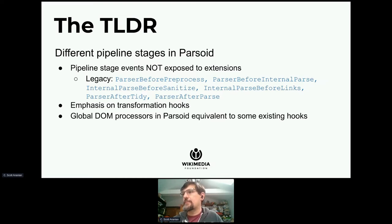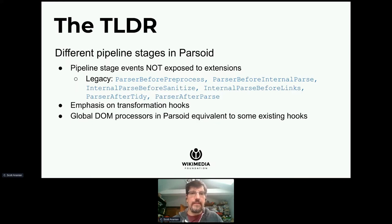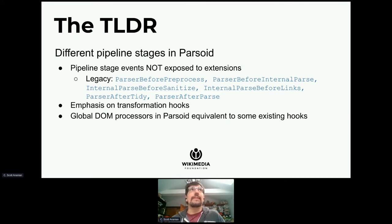Parsoid's emphasis is on DOM transformation — the hooks we provide give you a DOM tree and expect a DOM tree or DOM fragment in return. You can hook up a global post-processing hook on the DOM, which is roughly equivalent to the parser-after-parse hook, but your output is going to be a DOM, not an HTML string. The things people were using these hooks for need to be revisited. There were complex interdependencies with particular phases of the legacy parser process, and that sort of stuff needs to be rethought.